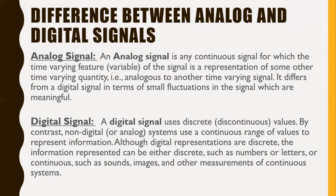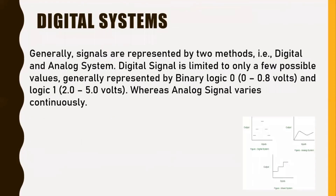Although digital representations are discrete, the information represented can be either discrete, such as numbers or letters, or continuous, such as sounds, images, and other measurements of continuous systems. Digital signals are limited to only a few possible values, generally represented by binary logic: logic 0 which varies from 0 to 0.8 volts, and logic 1 which varies from 2.0 to 5.0 volts.